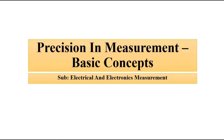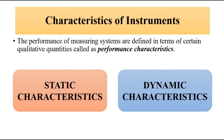Hello friends, welcome to Engineering Tutorial. We will continue our discussion related to electrical and electronics measurement. So far we were discussing about the performance characteristics of measurement systems. We know that the characteristics of instruments or measuring systems can be divided into two categories: static and dynamic characteristics. Static characteristics are those which remain constant or vary very slowly over a long period of time, while dynamic characteristics change rapidly over a short period of time.